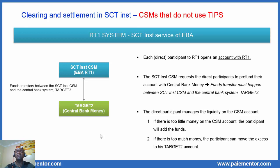One consequence of all this is that direct participants to a CSM that does not use TIPS must have an account in Target2. To summarize, we saw how settlement happens directly in TIPS and in the CSMs that do not use TIPS. The next question now is: what about the CSMs that settle through TIPS? That will be the topic of our next video. To really close the loop, I encourage you to watch that next video.